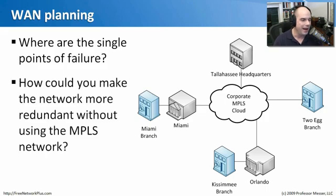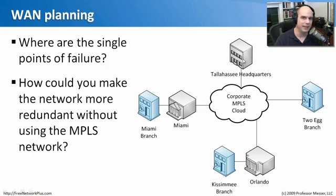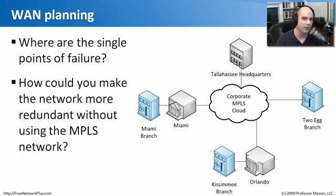If we know where our single points of failure are, how could we make this network more redundant? If the MPLS network went away — washed away by a hurricane — what could we do? One option is to have separate links to the internet, which is very common. In a main facility, they'll put a separate link to the internet through a completely separate network, often a different provider, and use encrypted tunnels between those sites so that traffic remains private.